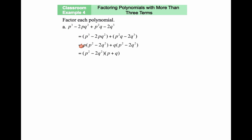When I group the first two terms, I see p is in common. The greatest common factor among the first two terms is p. If I factor p out, what times p gives me p cubed? It's p squared. What times p gives me 2pq squared? We're missing 2q squared. And when I factor q out of the next two terms, you notice that you get the exact same expression — which means we came up with the right grouping.